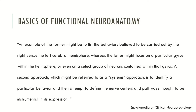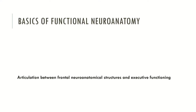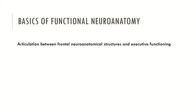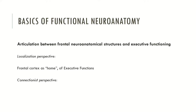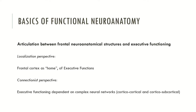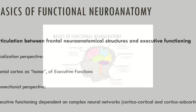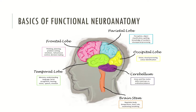A second approach — the systems approach — is to identify a particular behavior and attempt to define the nerve cells and pathways instrumental in its expression. As an example, we can look at the articulation between frontal neuroanatomical structures and executive functioning. From a localizationist perspective, the frontal cortex is called the home of executive functions. From a connectionist perspective, executive function may depend on several complex neural networks connected by cortical-cortical relationships and cortical-subcortical relationships — connections between the cerebral lobes and subcortical structures such as the basal ganglia and amygdala.